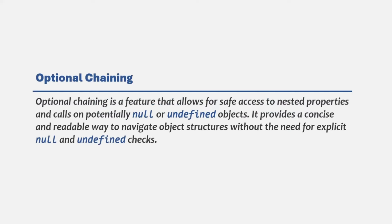In this lecture, let's understand what optional chaining is and how it can be useful to us. Optional chaining is basically a feature that allows for safe access to nested properties and calls on potentially null or undefined objects. It provides a concise and readable way to navigate object structure without the need for explicit null and undefined checks. Let's try to understand optional chaining with an example.